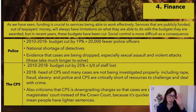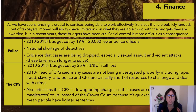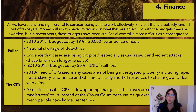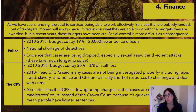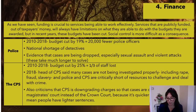Students have to link each statistic to how it's a limitation, what it implies, and what knock-on effects it has. From 2010 to 2018, the police budget was cut by 19%, meaning 20,000 fewer police officers. There is a national shortage of detectives, and evidence that cases have been dropped — especially sexual assault and violent attacks — because these take much longer to solve. Often it's one person's word against another, the cases are harder to solve, and less likely to be successful in court, so they just get dropped.